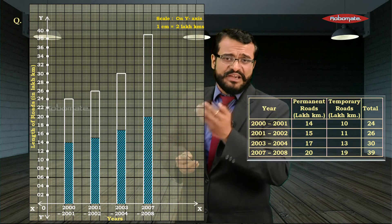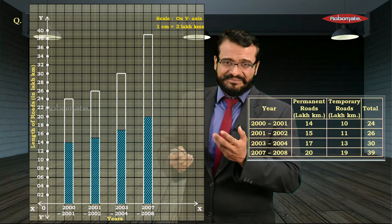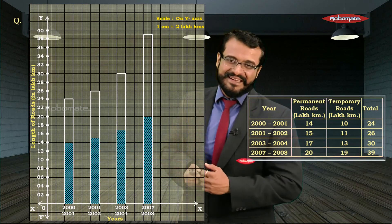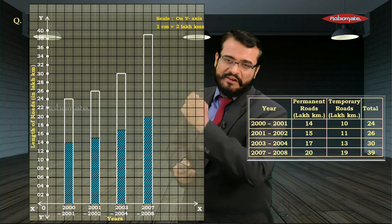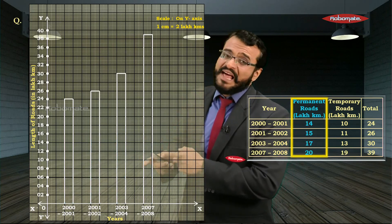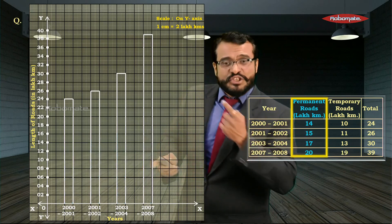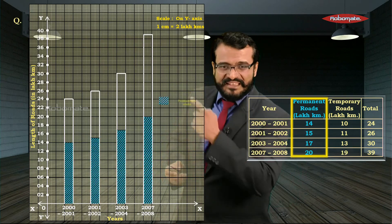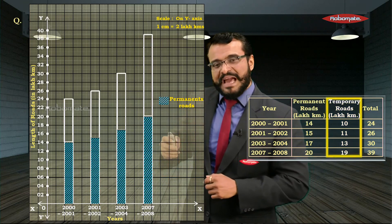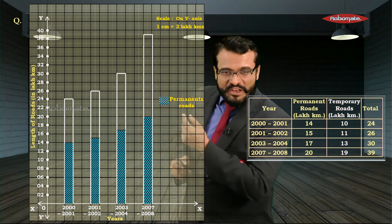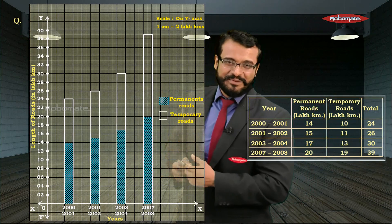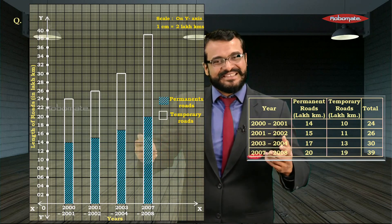Whoever sees your graph paper should understand the diagram, so add a legend. Use one full square with shading and label it 'permanent roads'. Use another full square blank and label it 'temporary roads'. That completes this sum.